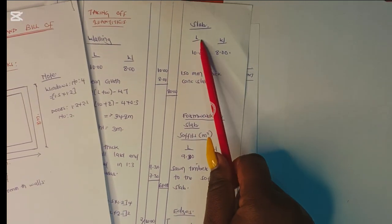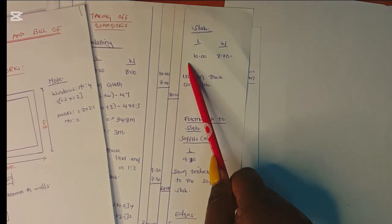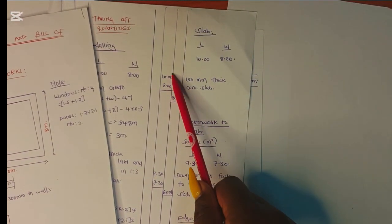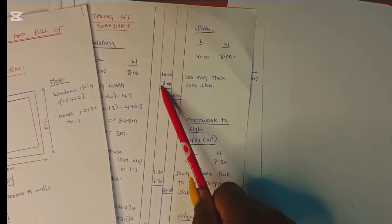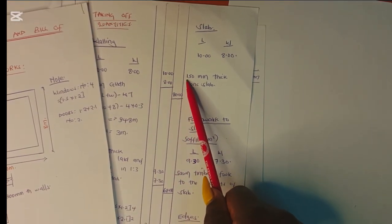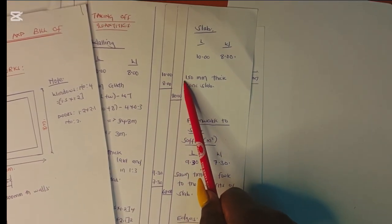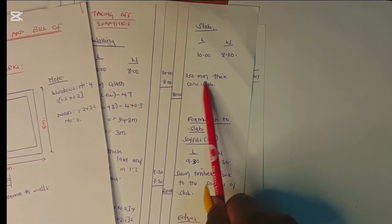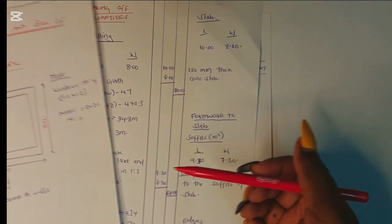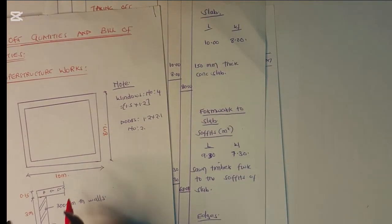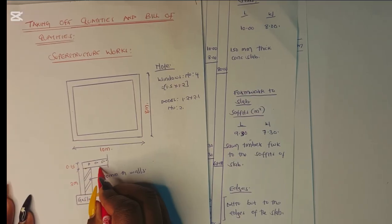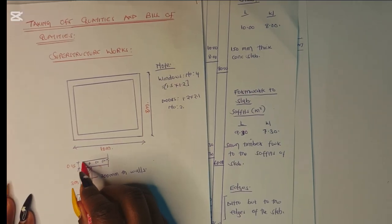Now let's book the slab. For the slab we book it in square meters — the length was 10 and the width was 8, giving us 10.00 by 8.00, which is 80 square meters. This is a 150 millimeter thick concrete slab. There is also formwork to this slab — formwork to the soffit at the bottom and to the edges.